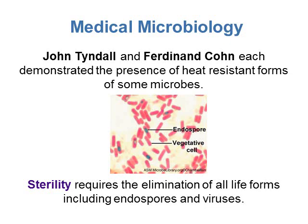The third prominent discovery is medical microbiology. Here we have two more microbiologists — John Tyndall and Ferdinand Cohn. They each demonstrated the presence of a heat-resistant form of some microbes, called an endospore or spore. Endospores can resist heat, chemicals, and dehydration, making them very hard to kill. An example of a spore is anthrax — once you breathe in that endospore, it germinates into bacterial cells, and those cells are the ones that make people sick with anthrax.